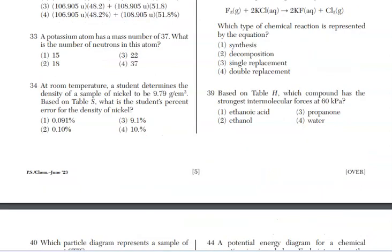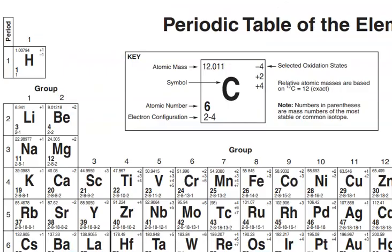Question 33, potassium atom has a mass number of 37. Now, hopefully you remember what the mass number is. The mass number is your protons plus your neutrons. You're asked, what is the number of neutrons in this atom? We need to take the 37 and subtract the atomic number for potassium. Now, don't guess. Go to the periodic table and get the atomic number.